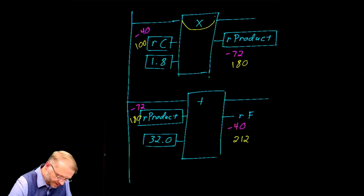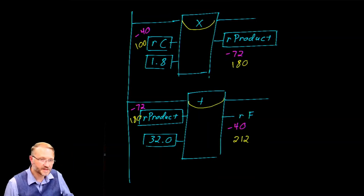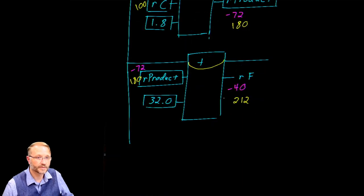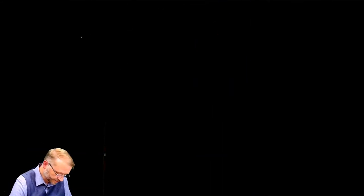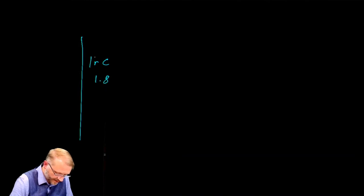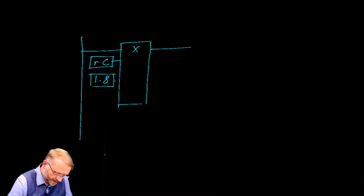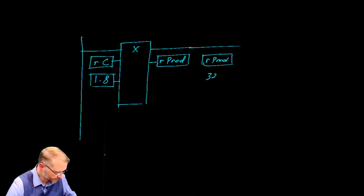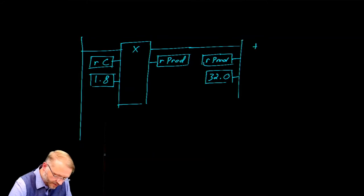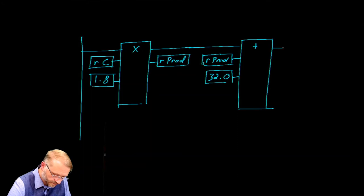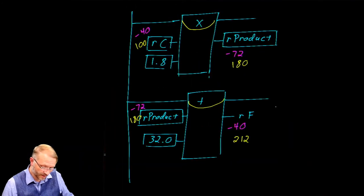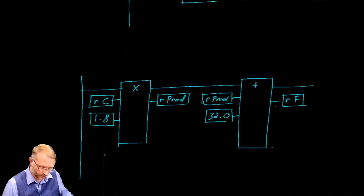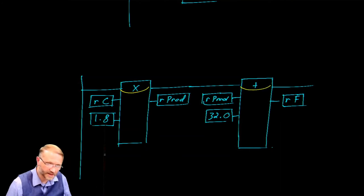These multiplier and adder blocks are internally connected to each other, which suggests there might be a cleaner way to draw this code — you could put everything on a single rung. The first part looks the same: Celsius and 1.8 through a multiplier, output goes to product. We then take real product and 32.0 through an adder, giving us real Fahrenheit. Same operation, except now everything's on a single rung, and that works because our enable out is a copy of enable in.